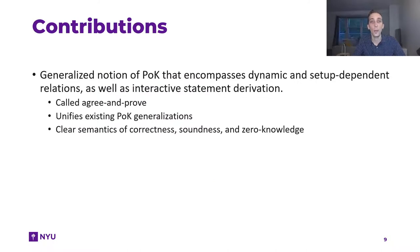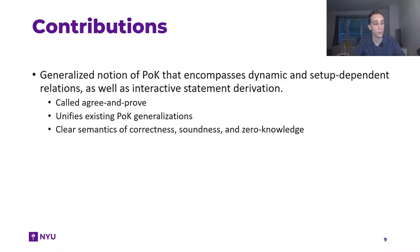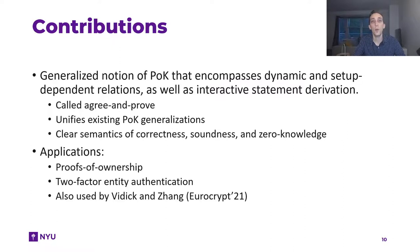A bit more concretely, in our work we introduce a generalized notion of proof of knowledge that encompasses both dynamic setup and relation, as well as this interactive two-phase process where one first agrees on the statement and then actually runs the proof. We call our notion "agree and prove," and we observe that it actually unifies all existing proof of knowledge generalizations. Our notion comes with clear semantics of correctness, soundness, and obviously zero-knowledge.